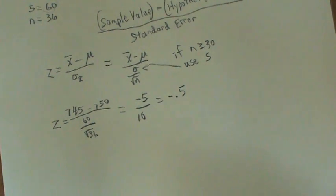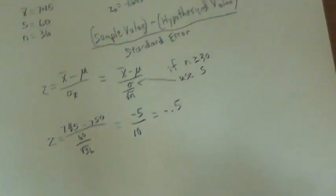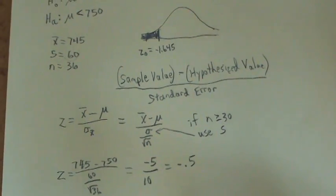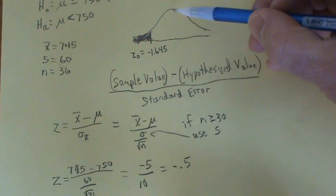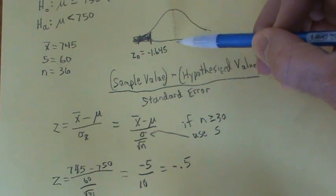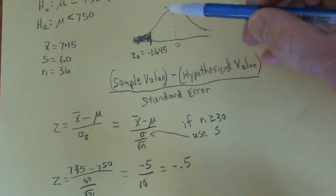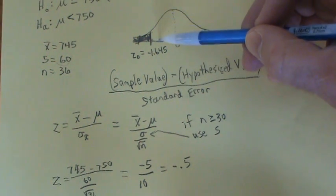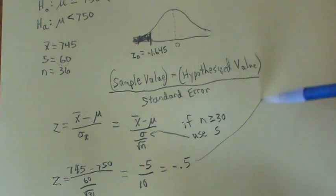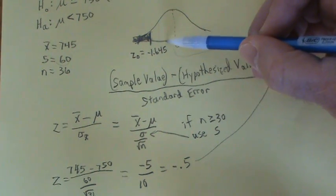So that is our standardized test statistic. Where does this fall in comparison to our rejection region? Well, remember on a normal curve, the middle is 0, and here's where our critical value is at negative 1.645. Negative 1 would be about right here, so negative 0.5 is like about right here.